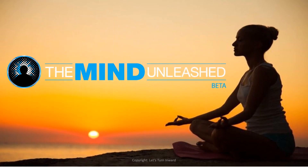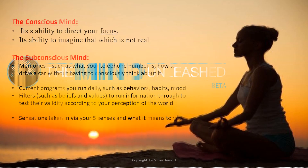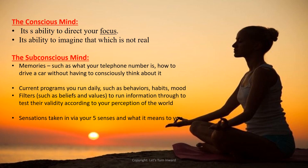The Mind Unleashed is an online portal where we can find different research and articles related to the human mind. From there, I gathered information about four levels: the Conscious Mind, which is our ability to direct focus; the Subconscious Mind, which stores memories such as your telephone number, how to drive a car, or how to swim; the Unconscious Mind; and the Super Conscious Mind.